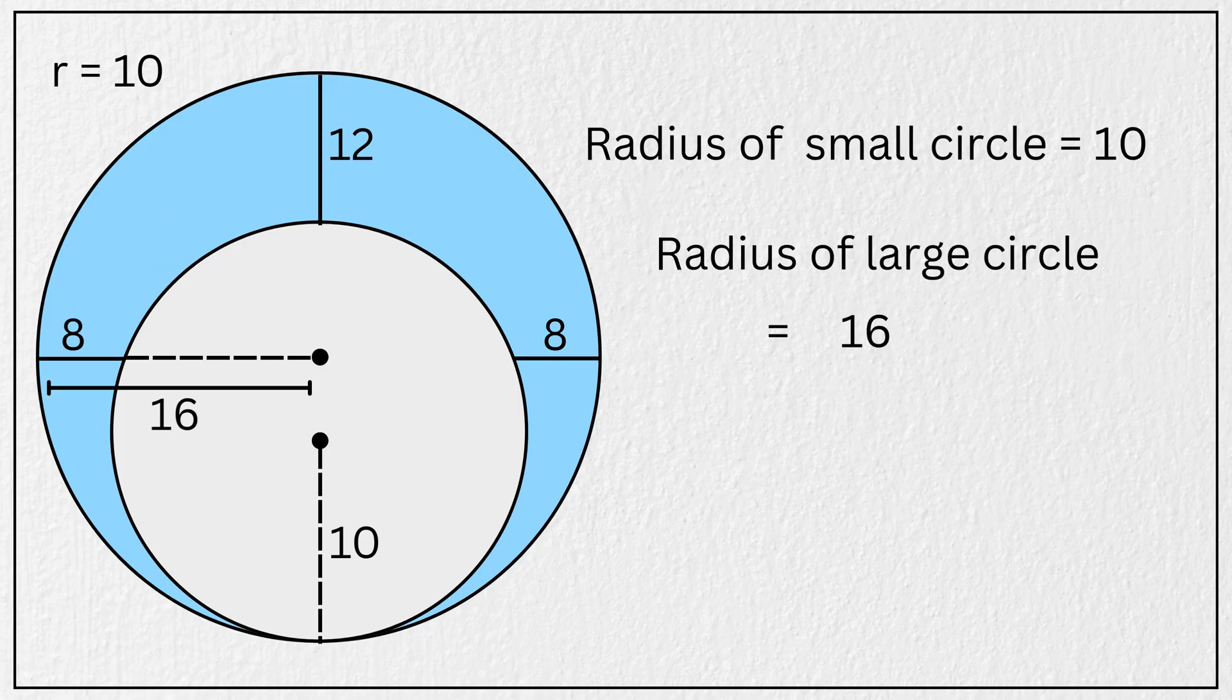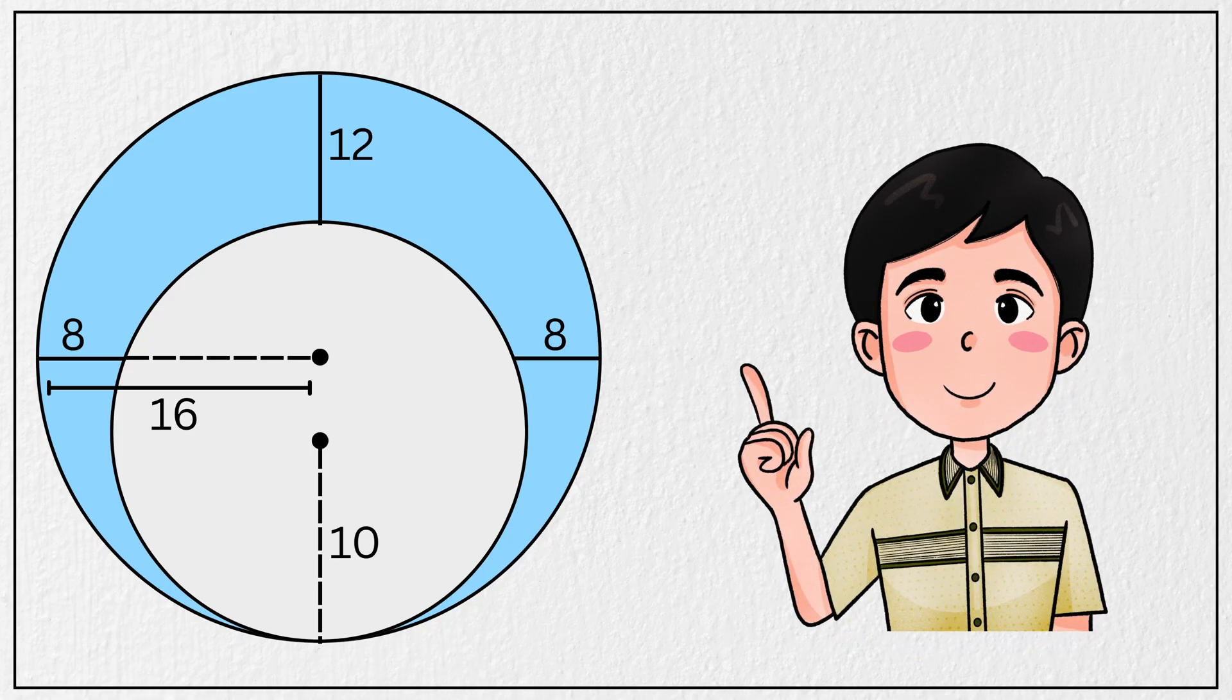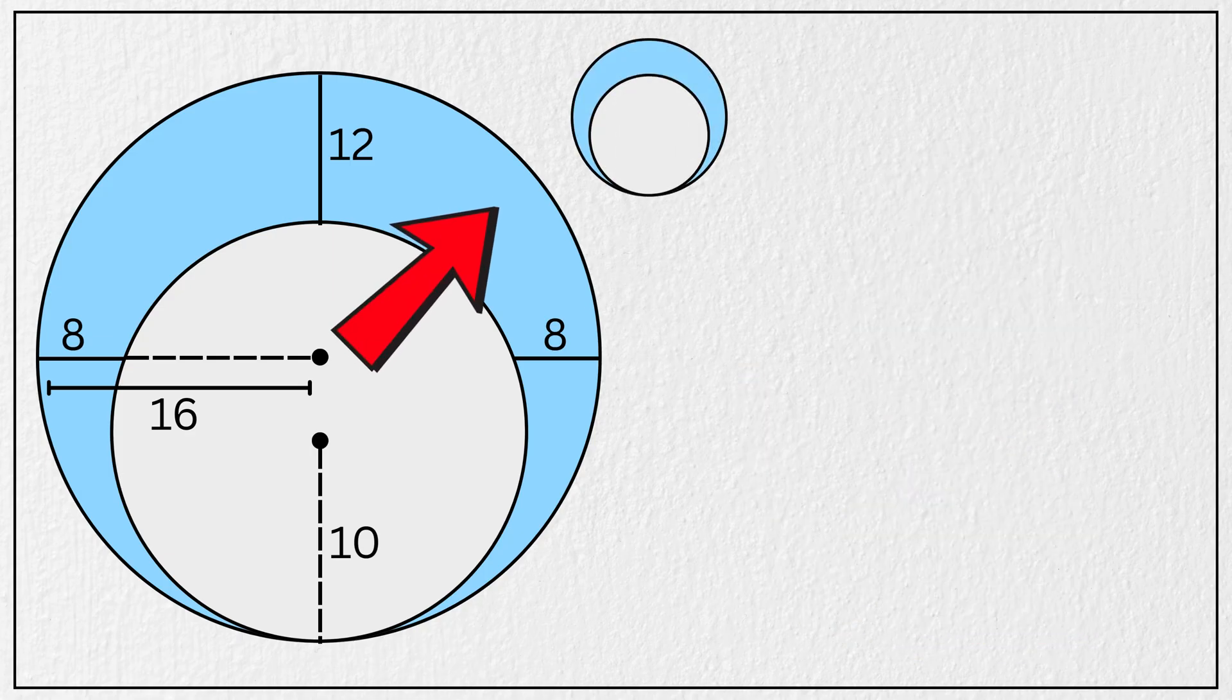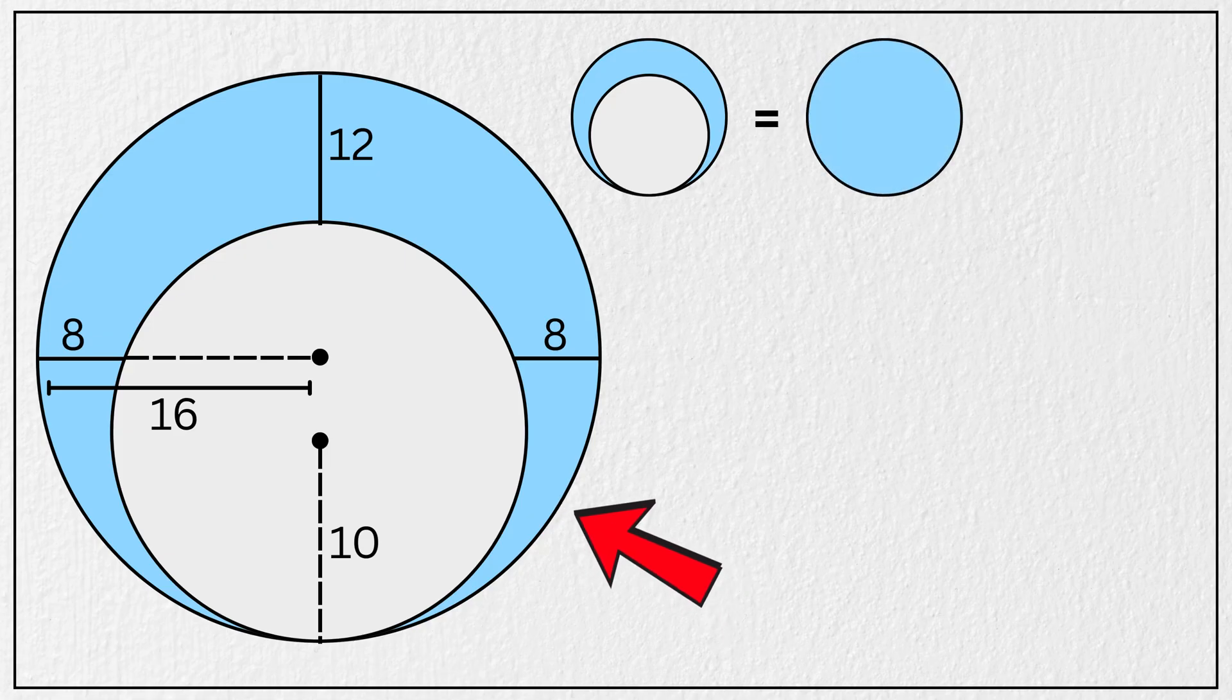Now we have everything to calculate the area of this blue shaded region. From the diagram, we can see that area of this blue shaded region is simply the area of this larger circle minus the area of this smaller circle.